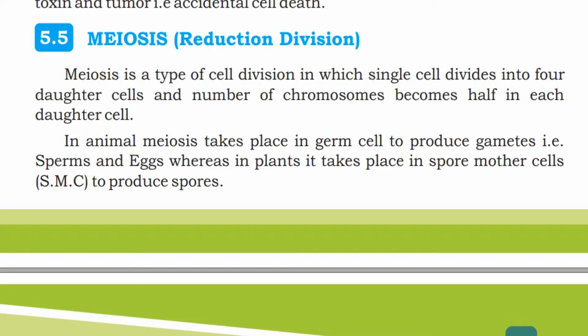Assalamualaikum, welcome to Student Tube. In today's lecture, 9th class Biology Chapter 5, the topic is meiosis — reduction division. Meiosis is a type of cell division in which a single cell divides into 4 daughter cells and the number of chromosomes becomes half in each daughter cell.